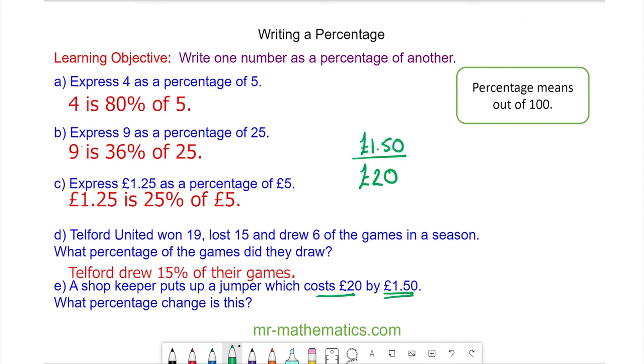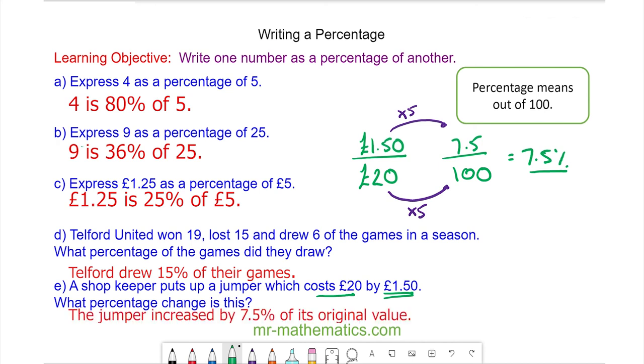What percentage change is this? So again we're going to write it as a fraction of 100. We can multiply the numerator and denominator by 5, because 20 goes into 100 five times. We do the same to the numerator and we get £7.50. So that is 7.5%. The jumper increased by 7.5% of its original value.